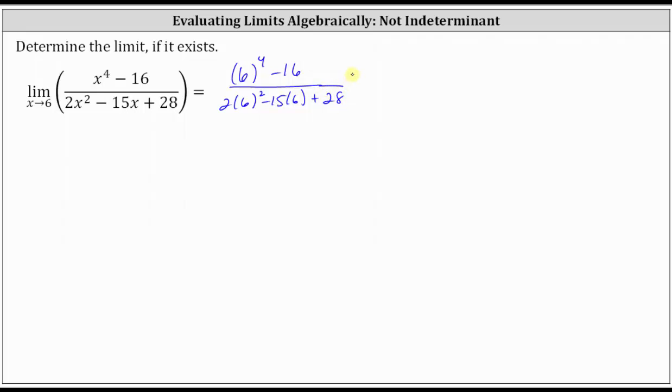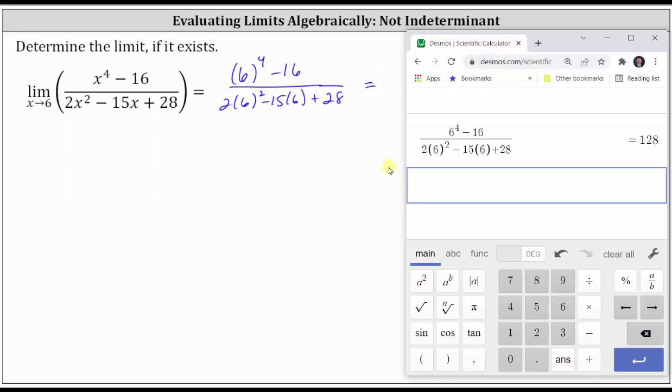If we don't have division by zero or the indeterminate form, then this will equal the limit. So going to the calculator, notice the result is 128, which means the limit equals 128 and we do not have discontinuity at x equals six.